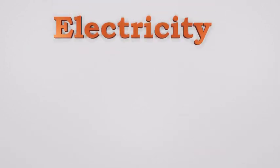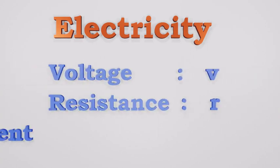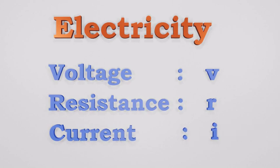We know there are three main terms used to describe electricity. Voltage denoted by V, Resistance denoted by R, and Current denoted by I.